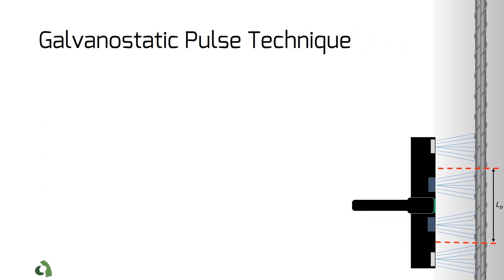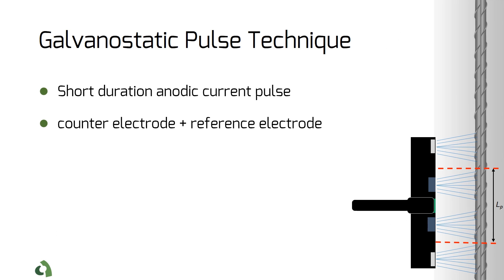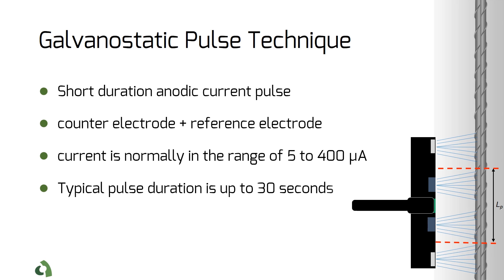The next technique I'm going to talk about is the galvanostatic pulse technique. The main concept used here is very similar to the LPR. An anodic current pulse is galvanostatically applied to the rebar from the counter electrode placed on the surface of concrete.